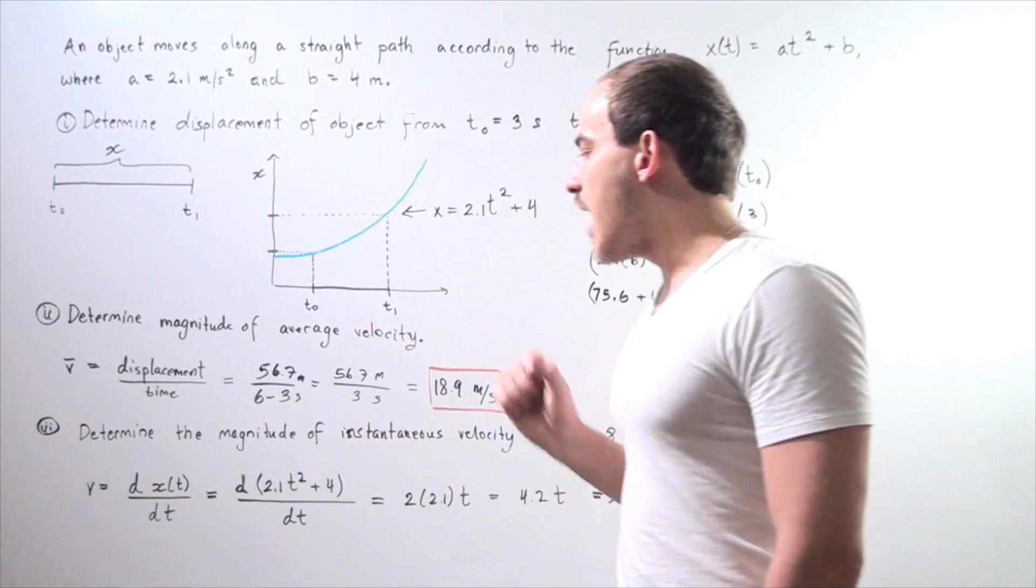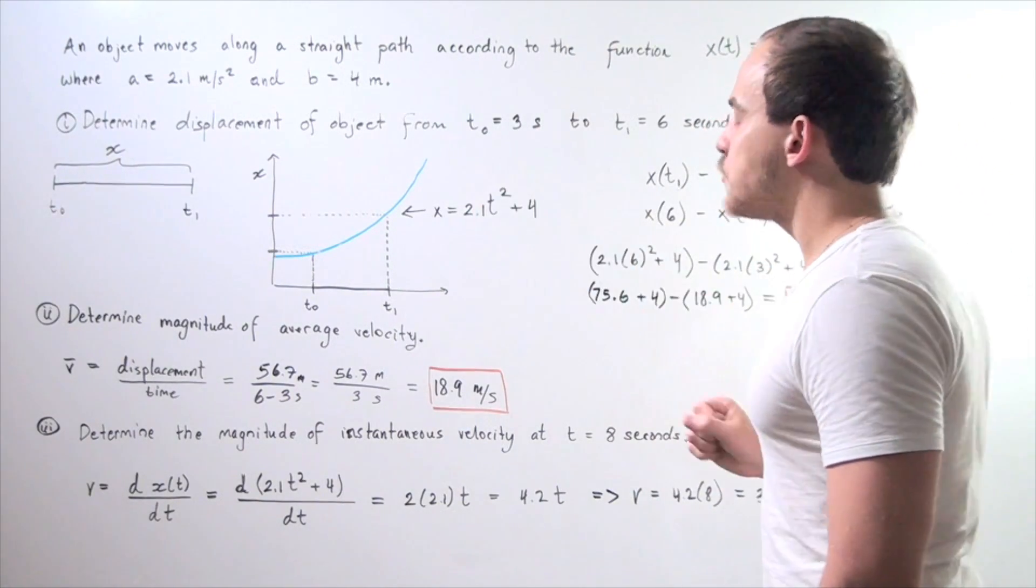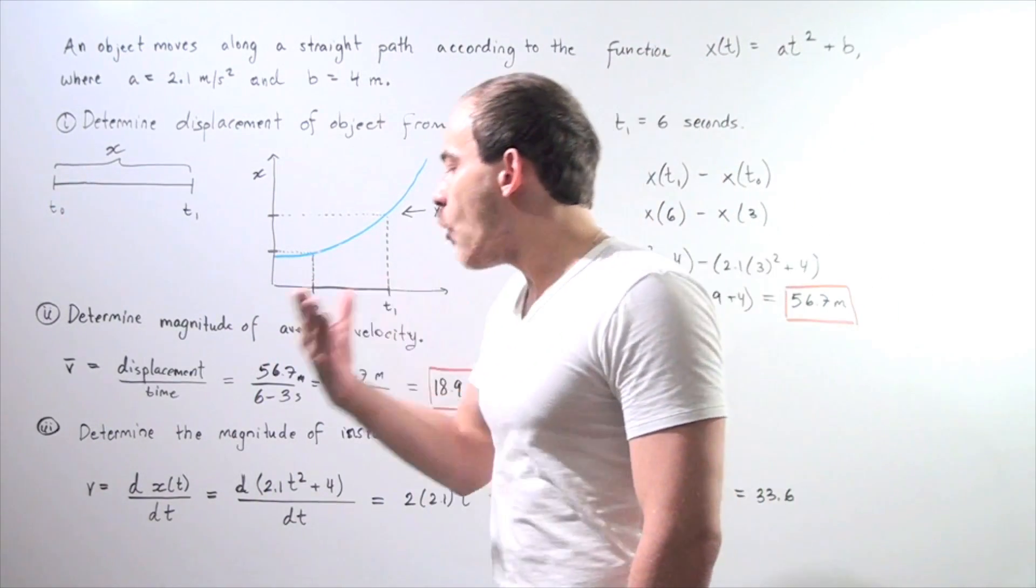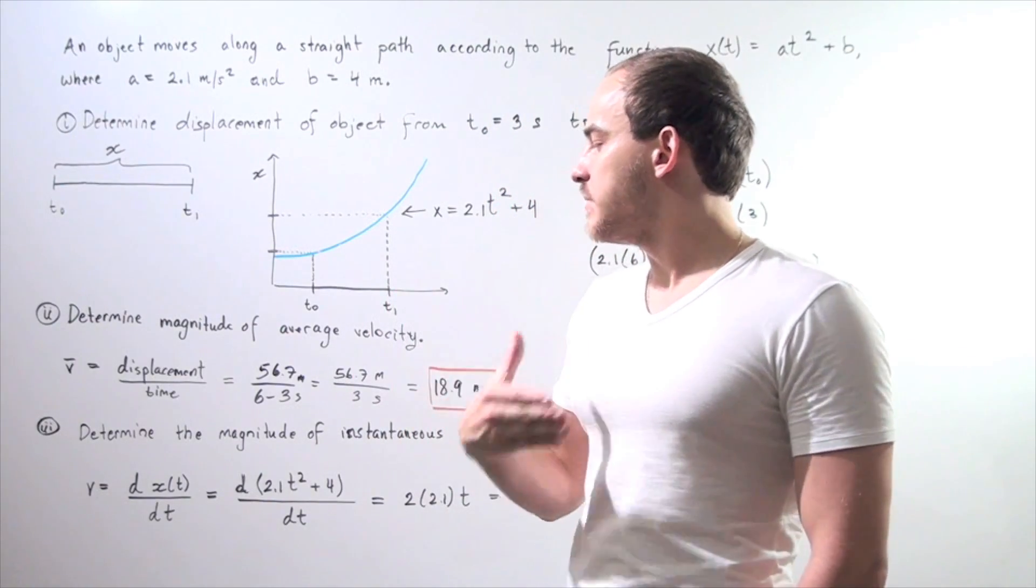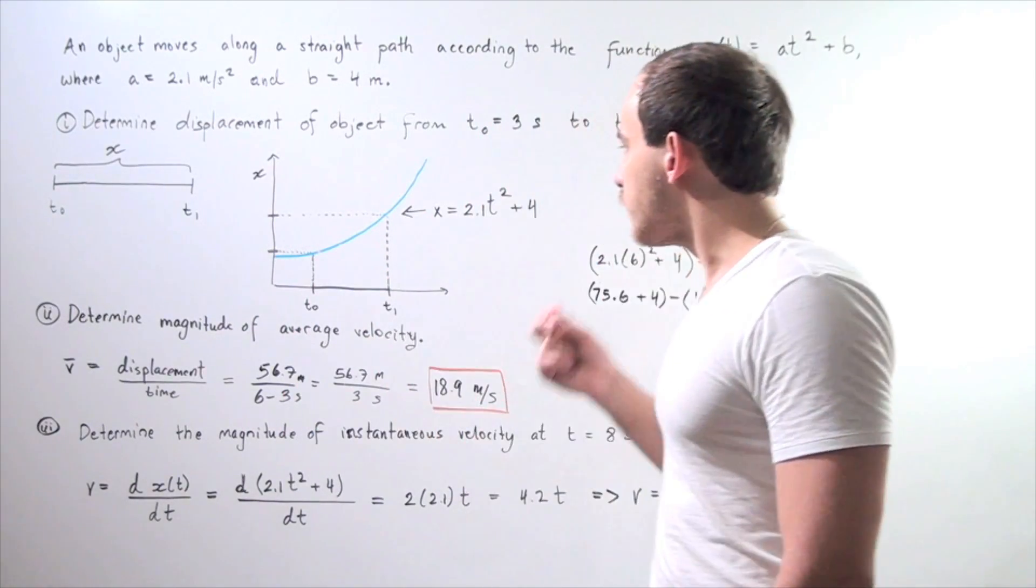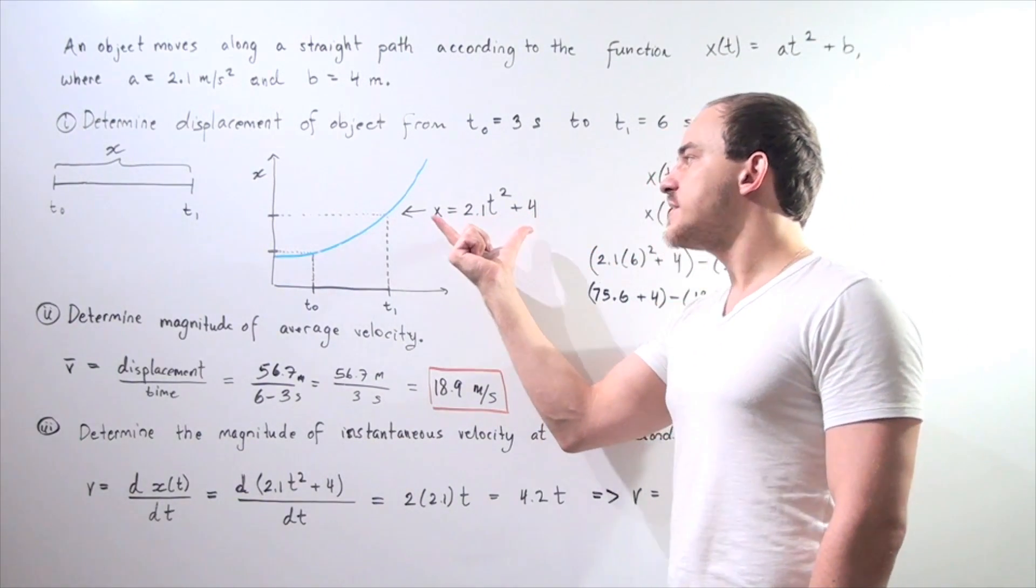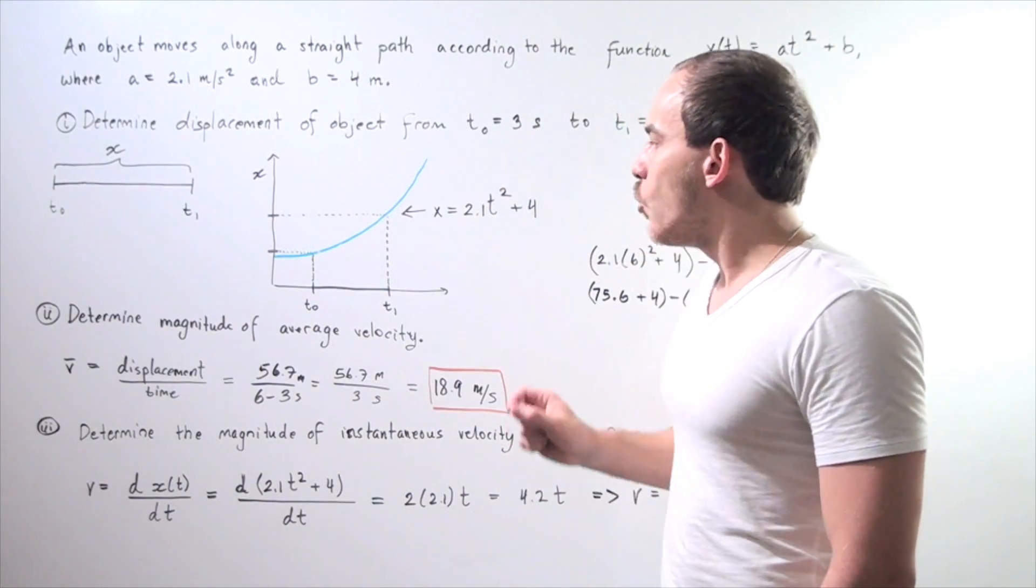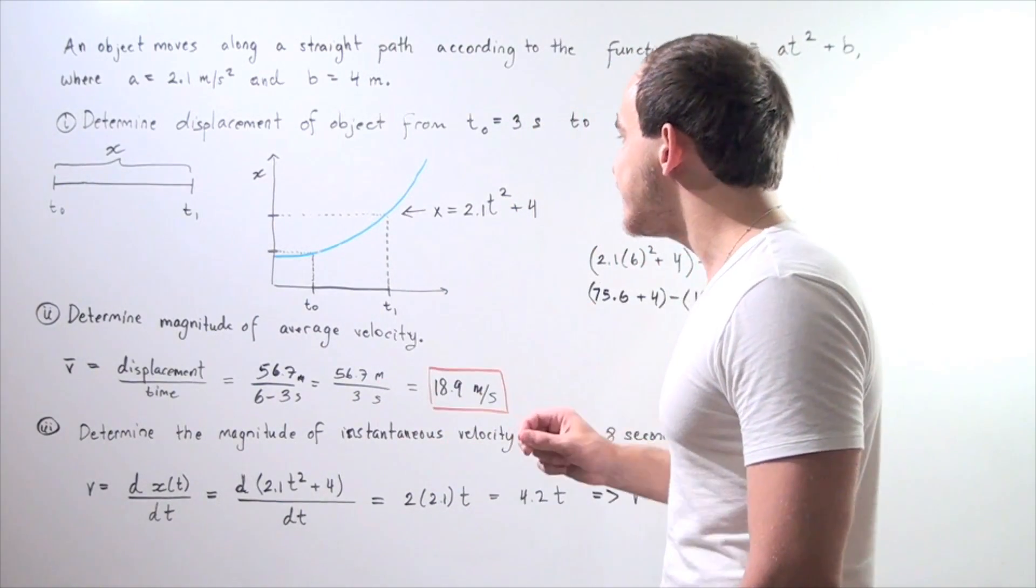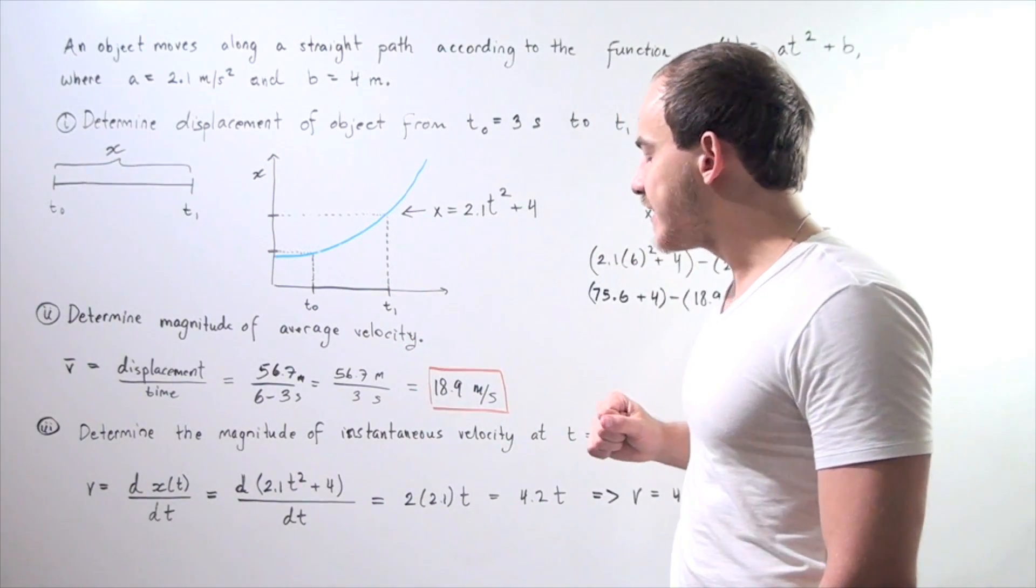Let's look at part 3i: Determine the magnitude of instantaneous velocity at time equals 8 seconds. This involves a bit of calculus. Recall that the formula for instantaneous velocity is given by taking the derivative of our displacement function. If we take the derivative of this function and find the value at time equals 8 seconds, we will find our instantaneous velocity. In other words, we'll find the value of the slope tangent at the point t = 8 seconds.